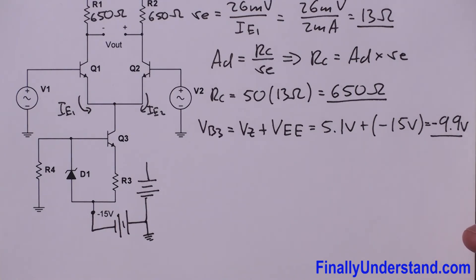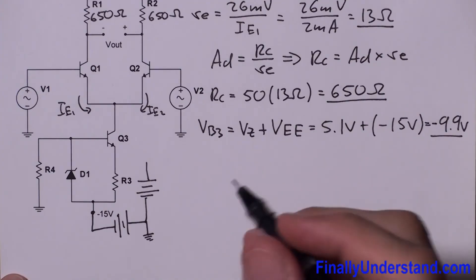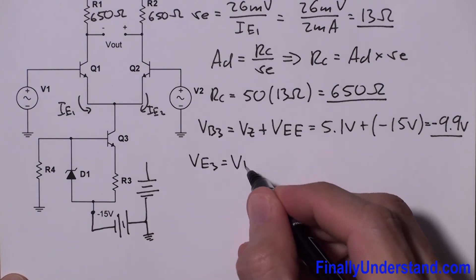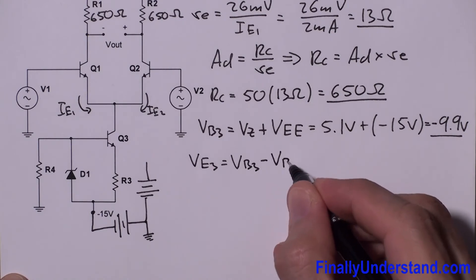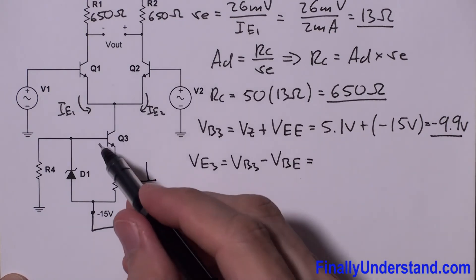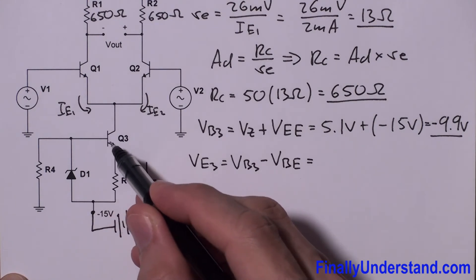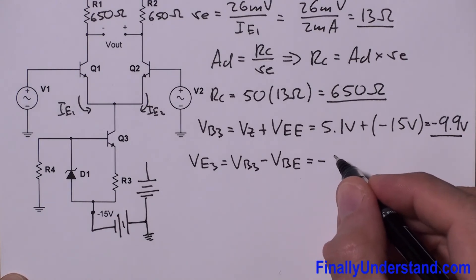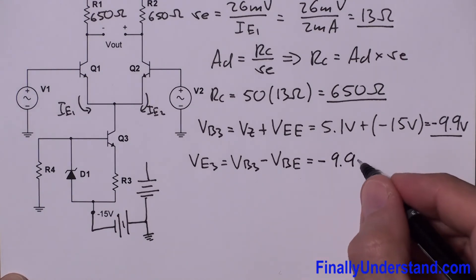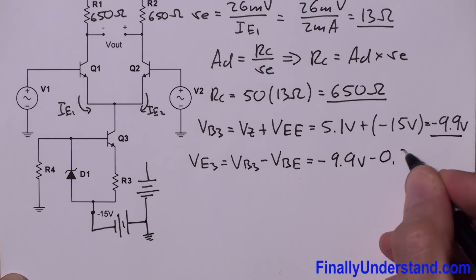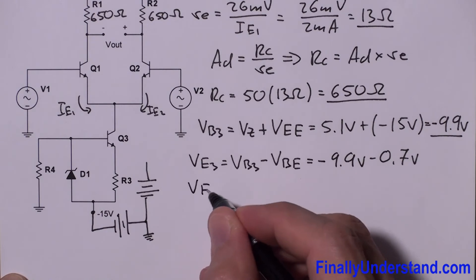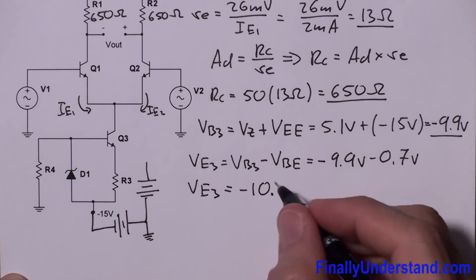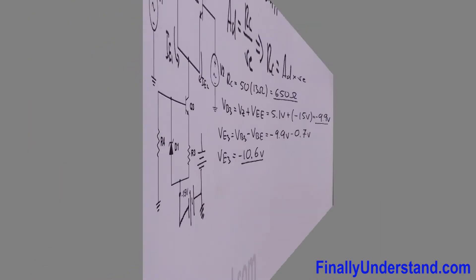Next, I need to find VE3. VE3 equals VB3 minus VBE. Voltage at the base minus VBE gives me voltage at the emitter. So VB3 is −9.9 volts minus 0.7 volts, therefore VE3 equals −10.6 volts.